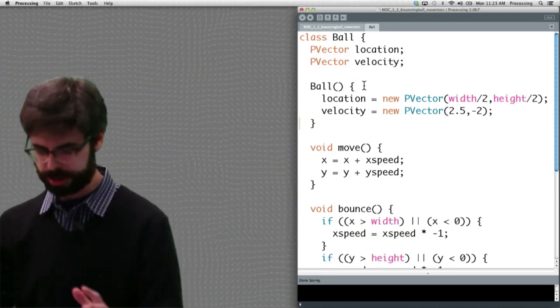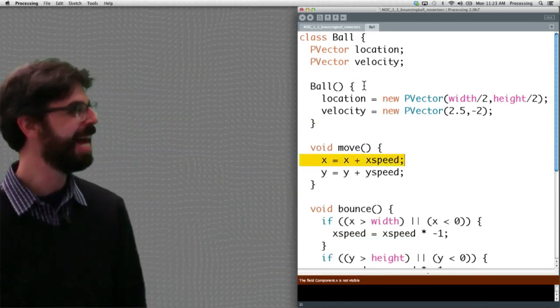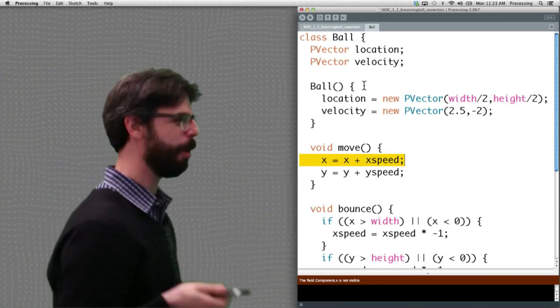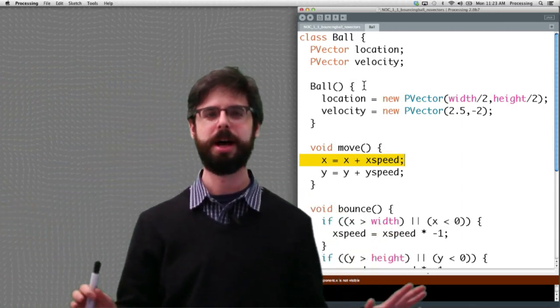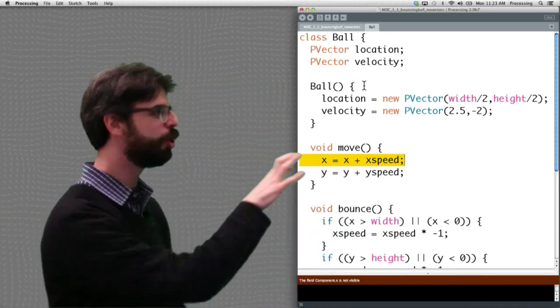All right, we're good. Now we run it. Of course we have an error. OK, x equals x plus xSpeed. We need to stop here for a moment. Well, maybe we don't. Let's just look at this. Look, x changes by xSpeed, y changes by ySpeed. Well, instead of x and y, instead of xSpeed and ySpeed, we have location and velocity.